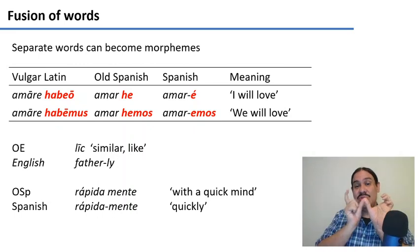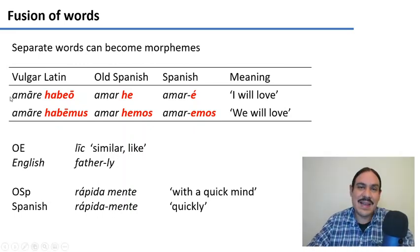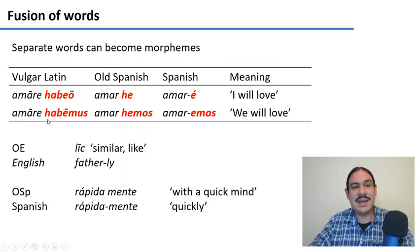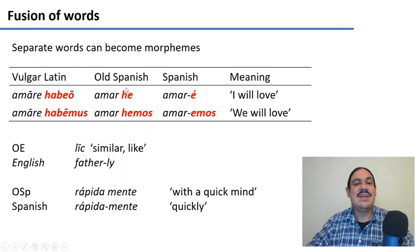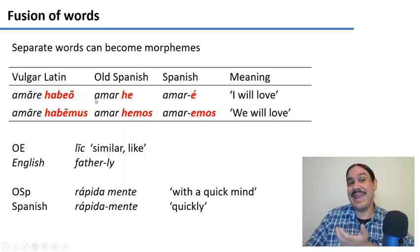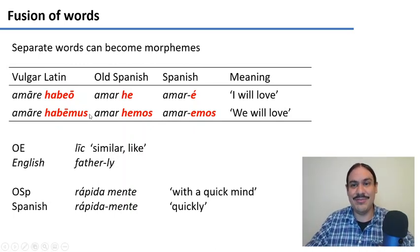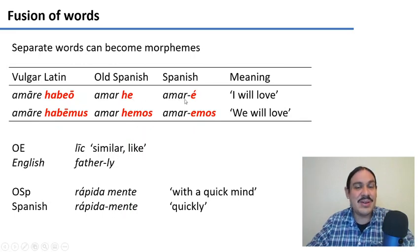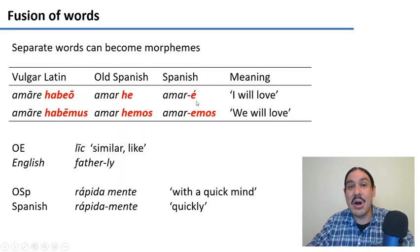Finally, words can fuse to form new morphemes. In late Latin, or Vulgar Latin, the phrases 'I will love' and 'we will love' were 'amare habeo' and 'amare habemus.' These auxiliary verbs — like 'I shall love,' 'we shall love' — were simplified in Old Spanish: 'habeo' became 'e,' 'habemus' became 'emos,' giving 'amar-e' and 'amar-emos.' These were reinterpreted as morphemes and became attached to the verbs, so that in modern Spanish we treat them as single words: 'amaré,' 'amaremos.' In this process, these auxiliaries became morphemes of Spanish.